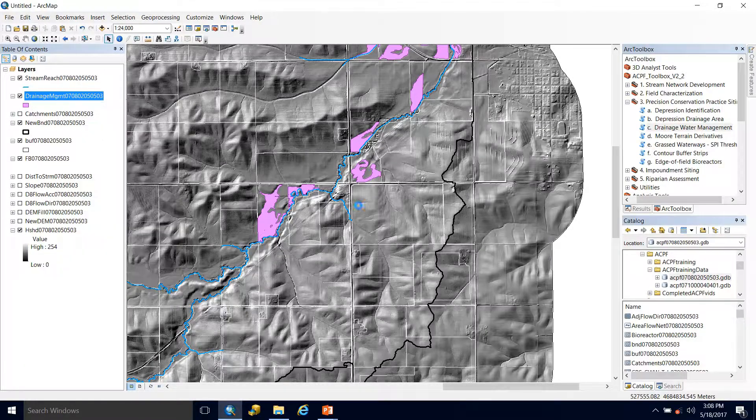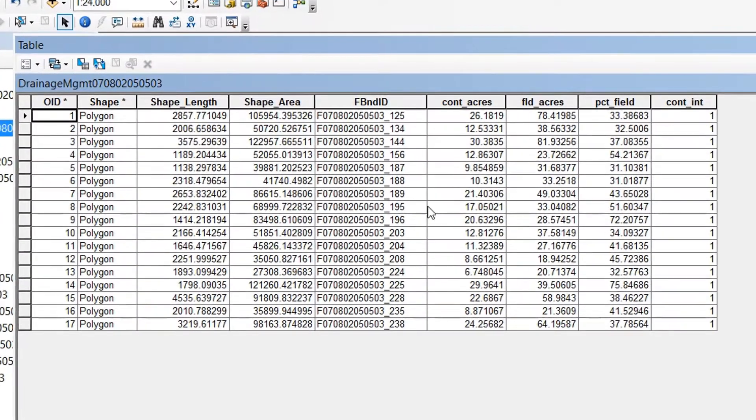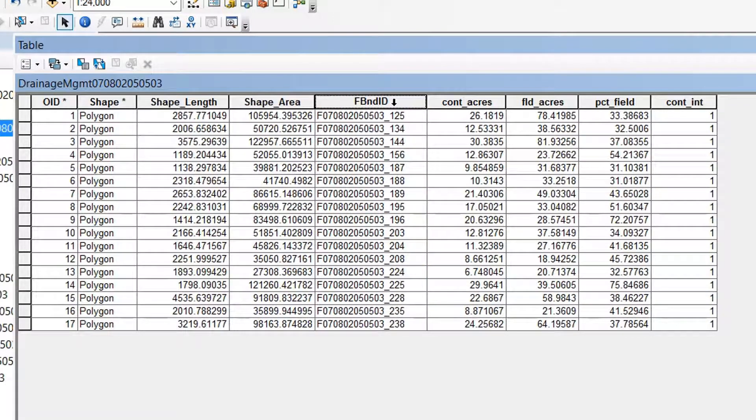So let's take a look at the attribute table and see what we've got. You can see we have the field boundary ID that it's associated with. You could see then if certain fields had more than one opportunity. In this case, it doesn't look like any of them did. I don't see any repeats.